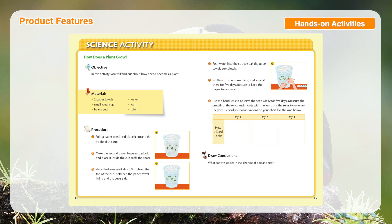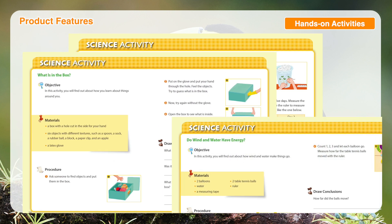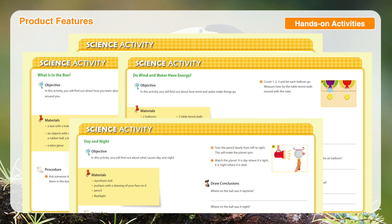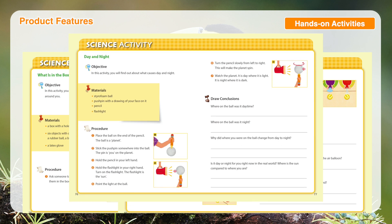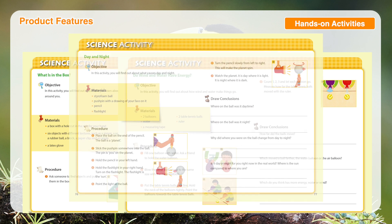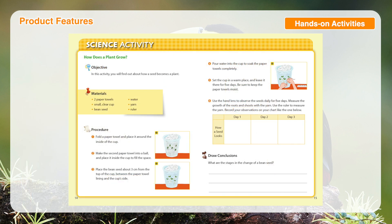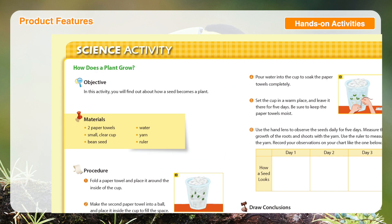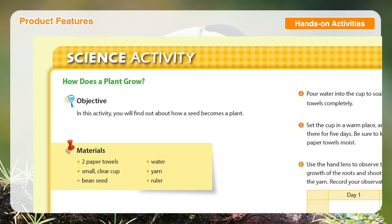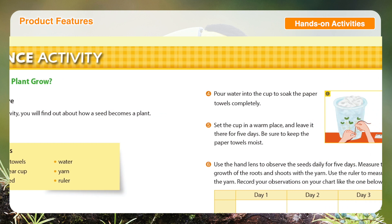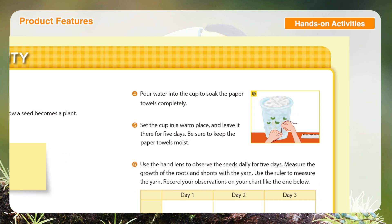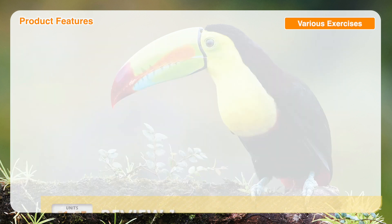Through the experiments in science activity, students are encouraged to raise questions, follow the instructions, investigate, and come to conclusions related to the topic. Each experiment has been designed so that the required items are easy to locate and can usually be found in most households.